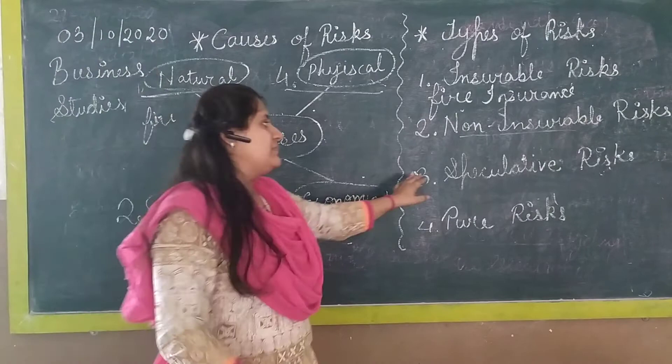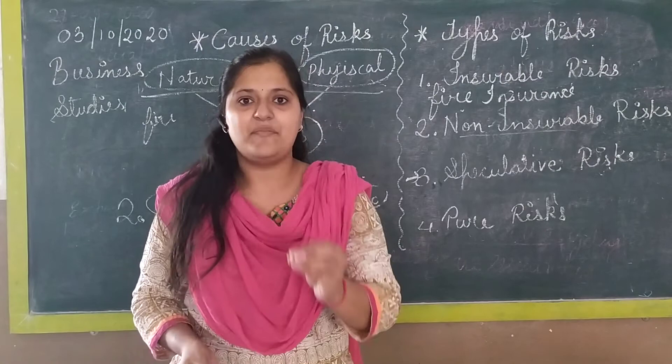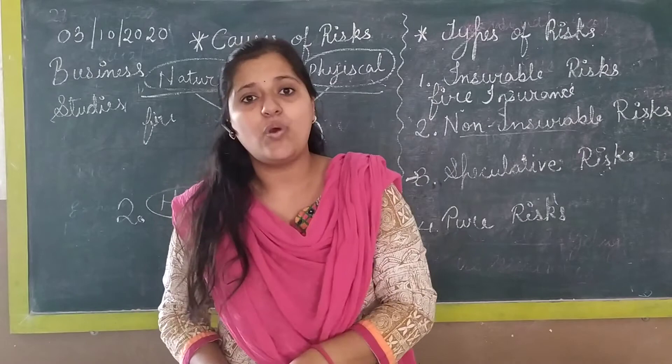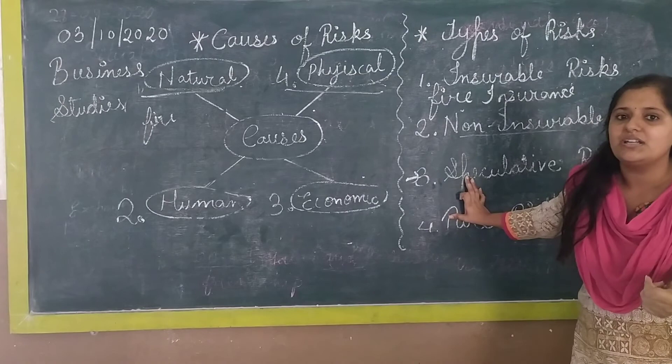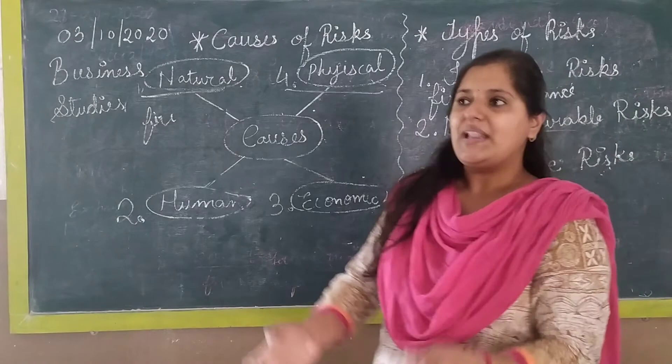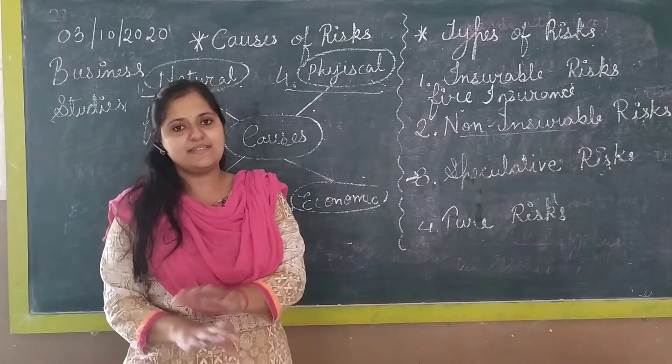The last type is pure risk. In pure risk, there is only a possibility of loss — there is no chance of profit. For example, if there is a fire, you will get a loss. If there is an occurrence of the event, there is loss; if there is no occurrence, there is no loss — but there is never a gain. These situations are termed as pure risk.